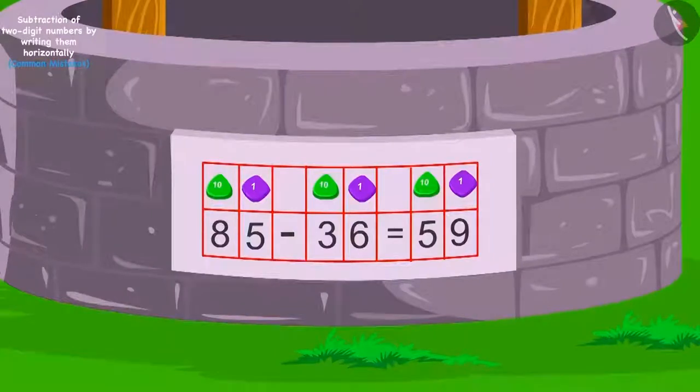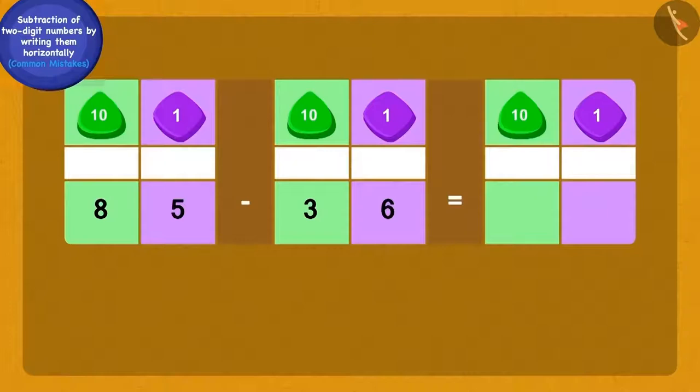Absolutely correct! Here, we cannot subtract the six ones of 36 from the five ones of 85. So, we have to borrow one ten from the eight tens of 85. In this subtraction, by borrowing, six ones have been subtracted correctly from 15 ones.